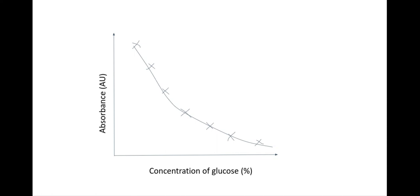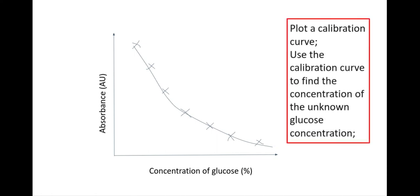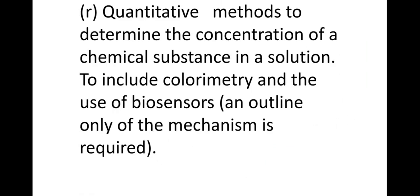Now because I've treated my unknown sample in exactly the same way, I'll know the absorbance of my unknown sample and I can use my calibration curve to find the concentration of my unknown glucose sample. And so I'd literally just read across and I would get the concentration of my sample. And that is how you use a colorimeter.